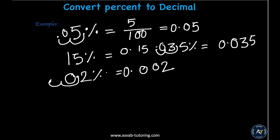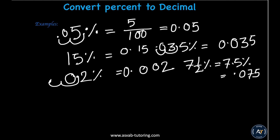The last example is seven and one half percent into a decimal. Seven and one half percent is the same as 7.5%, and if you move two decimal places, that gives you 0.075.